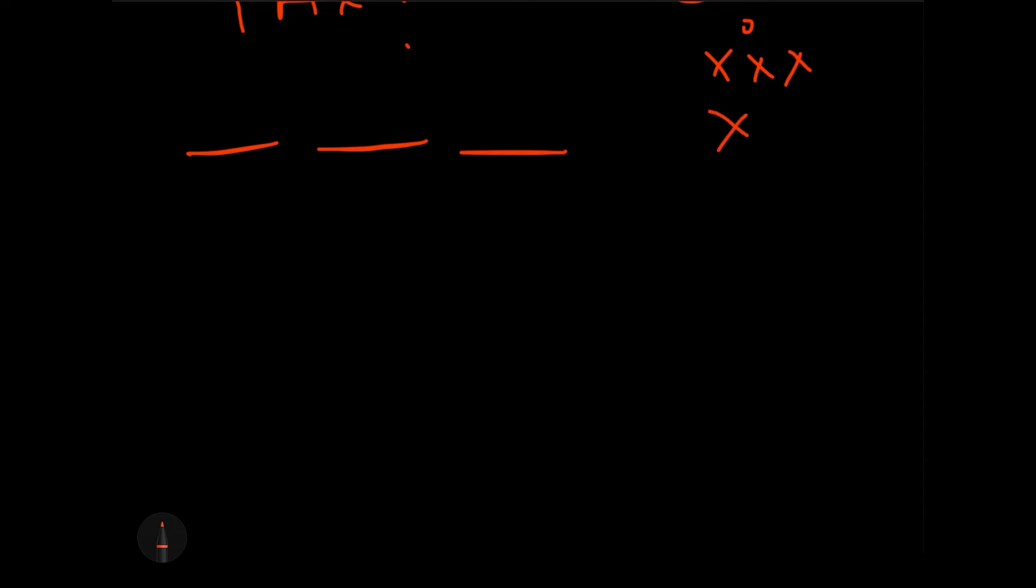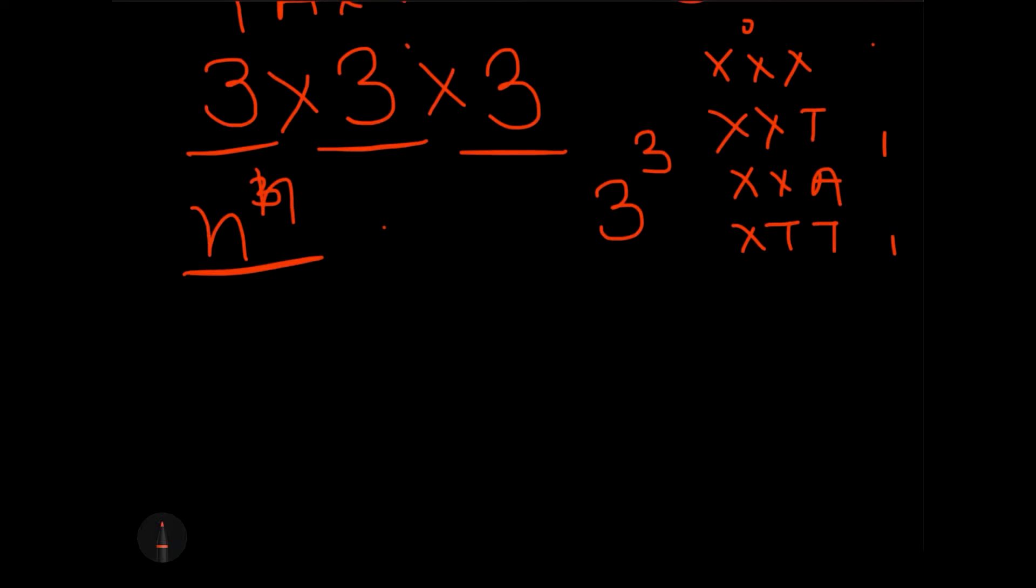Now what happens in the case of repetition is we can have conditions like XXX, we can have conditions like XXT, XXA, XTT, etc. So the number of arrangements will definitely go high. In this condition, you have to understand that in the first position also I can choose any of the three letters, in the second position also I can add any of the three letters, and in the third position also I can add any of the three letters. So if I multiply it, this will become 3 cube.